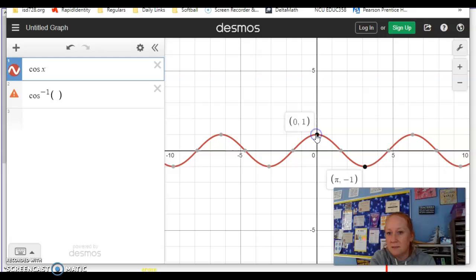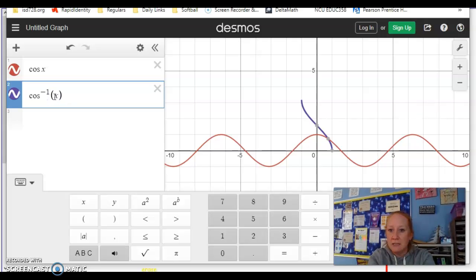So this is (0,1), this is (π,-1). That's like when it gets from here to here, right? Okay, so let's see what does the inverse look like.